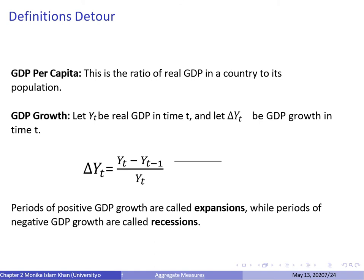GDP per capita is real GDP divided by population. The GDP growth rate for year T equals GDP in year T minus GDP in year T minus 1, divided by GDP in period T minus 1. When this growth rate is positive, we know we're having an expansion. When this growth rate is negative, we know we're having a recession.